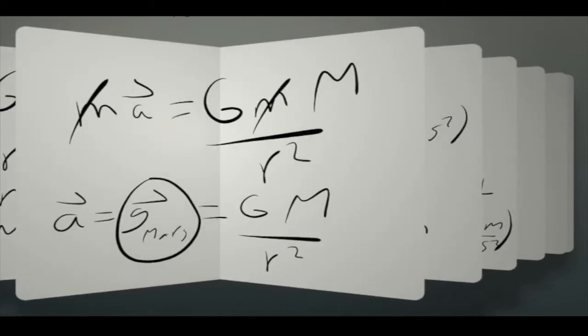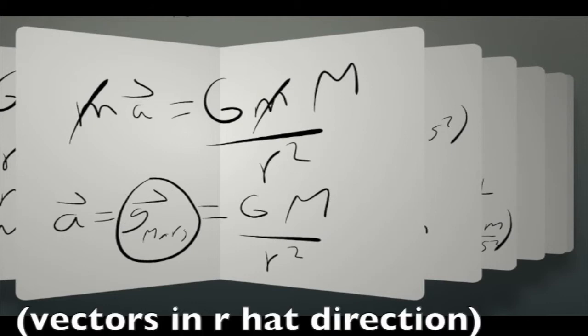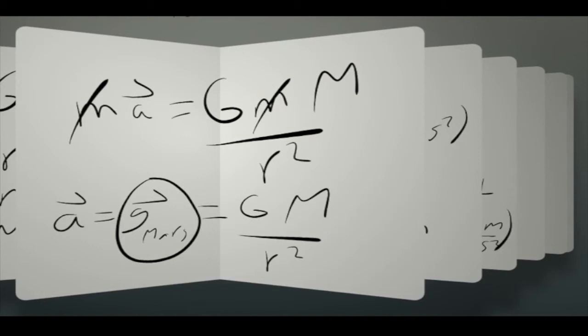If we set those two equations equal to each other we see that the acceleration is equal to capital G times capital M divided by r squared. The acceleration is the acceleration for gravity so you can relabel that as G sub Mars with a vector sign.